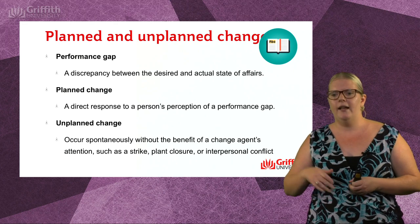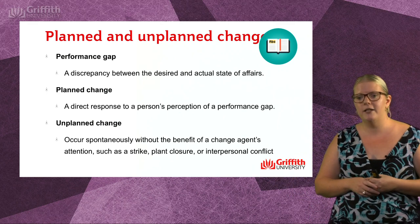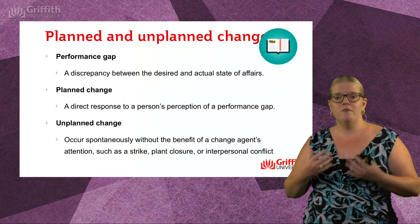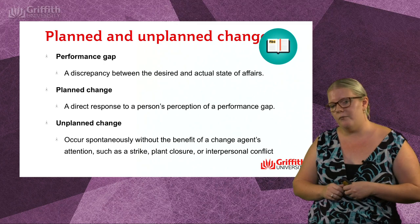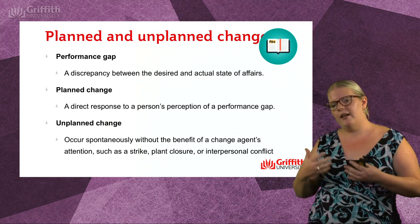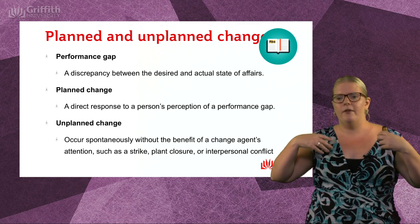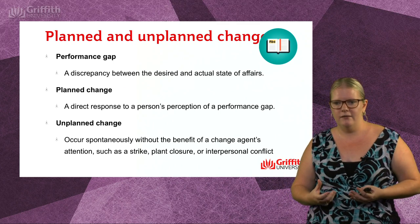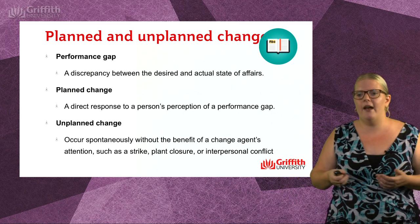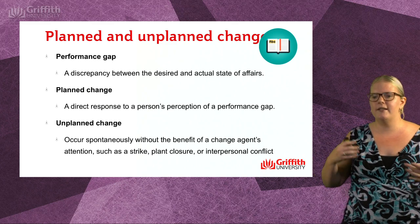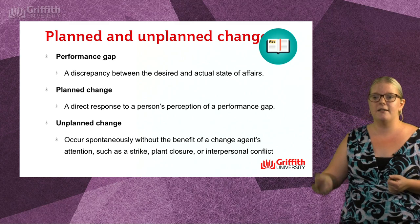However, if that gap is identified by outsiders — for example, say I went to accreditation and I failed my accreditation because various issues were wrong — then I need to engage in an unplanned change process. That means it occurs spontaneously and doesn't benefit any of the change agents. So it might involve a strike, a planned closure, an interpersonal conflict — something's going to happen but I can't predict what's going to happen.